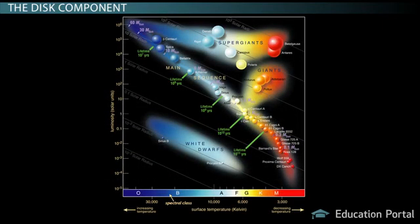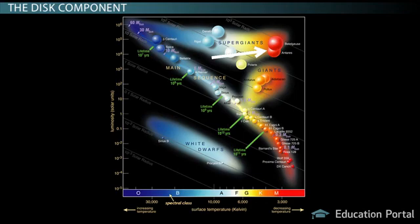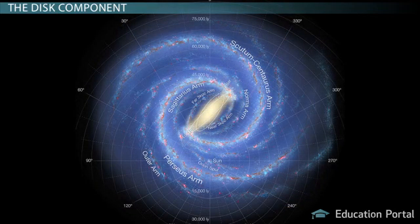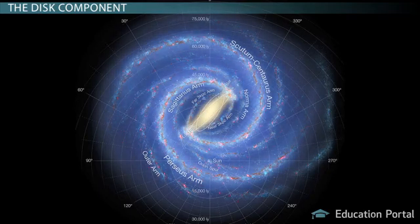While most of the stars in the disk are middle to lower main sequence stars, there are exceptions. There are some white dwarfs, red giants, and even very massive class O and B stars. The latter two are rare but are so luminous that they provide a lot of the light emanating from the disk itself.